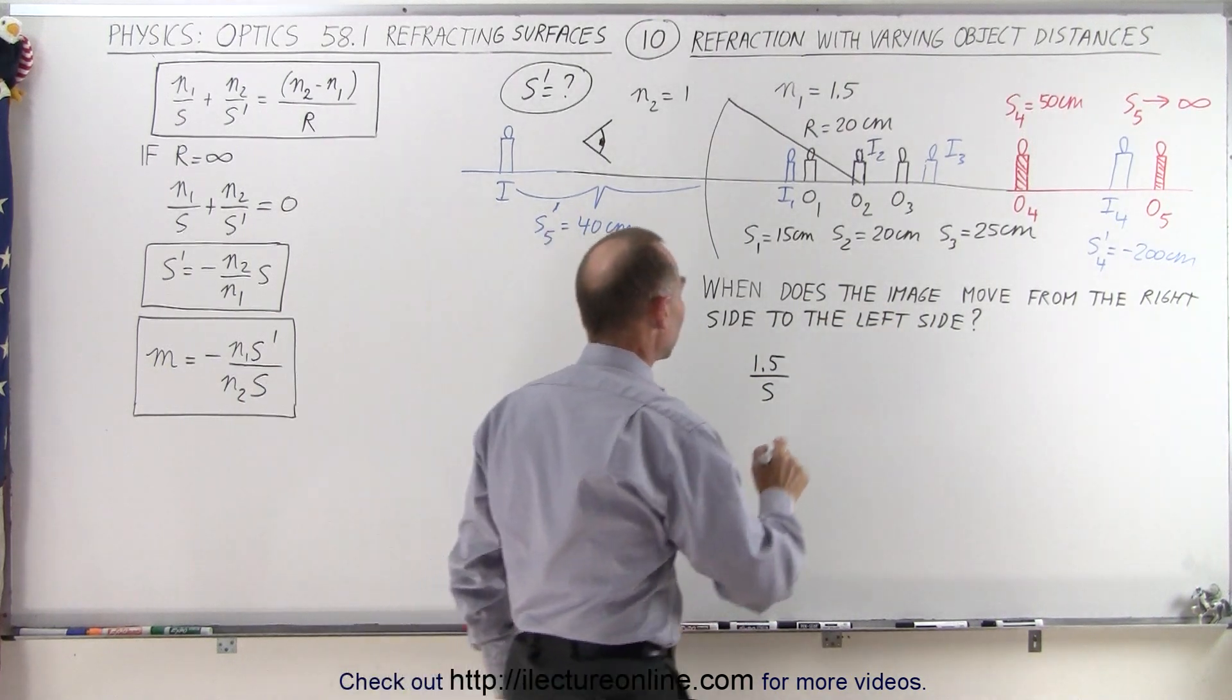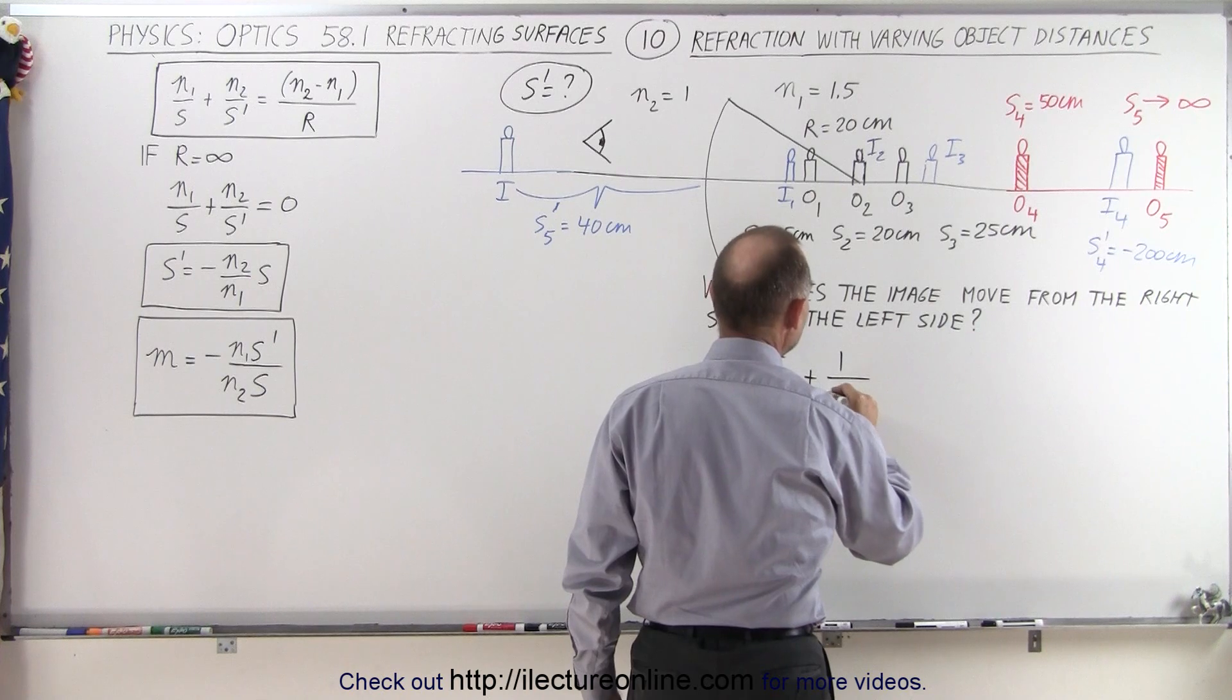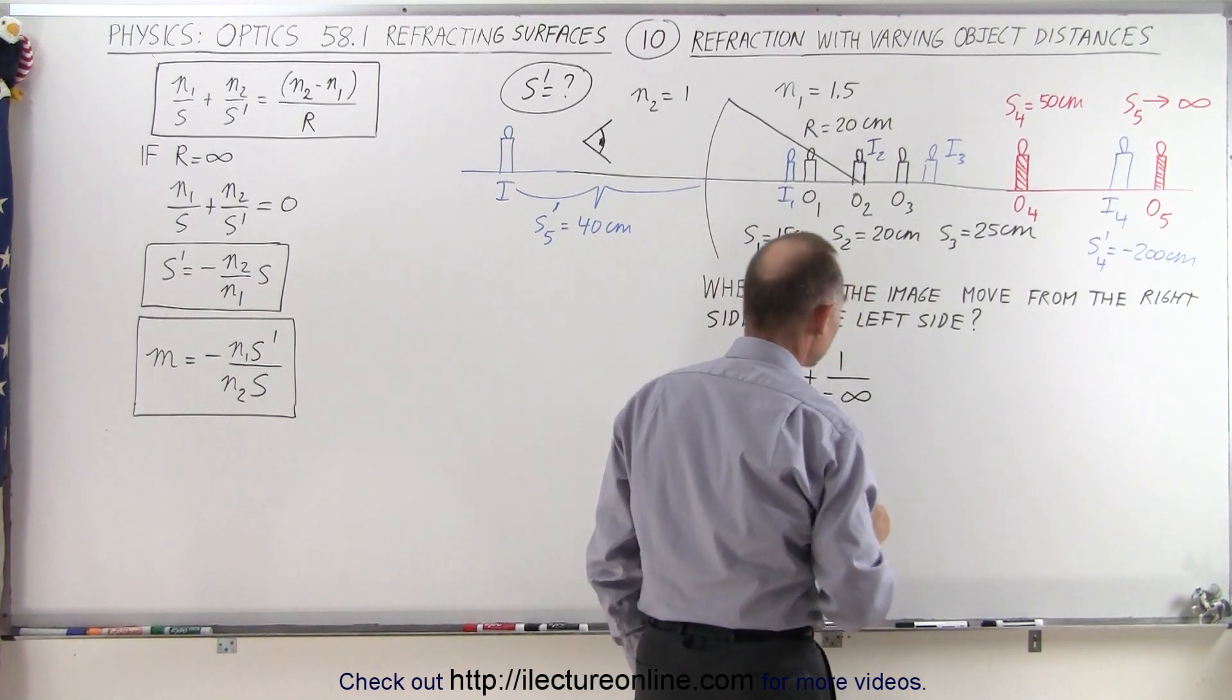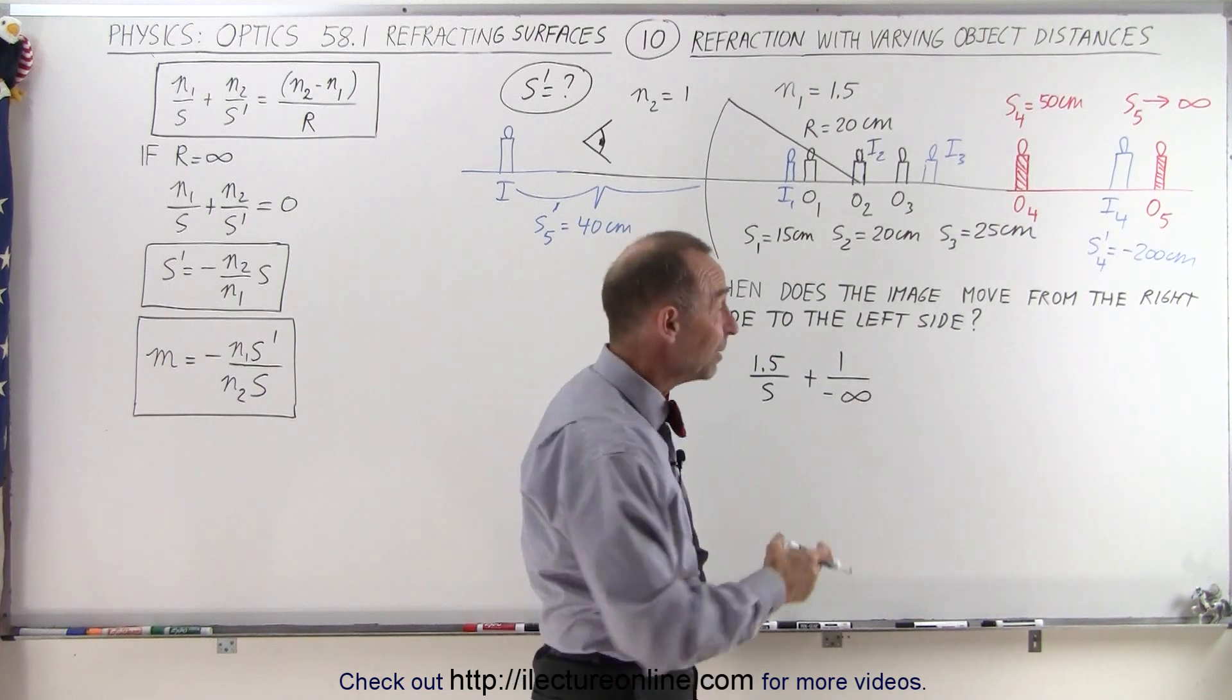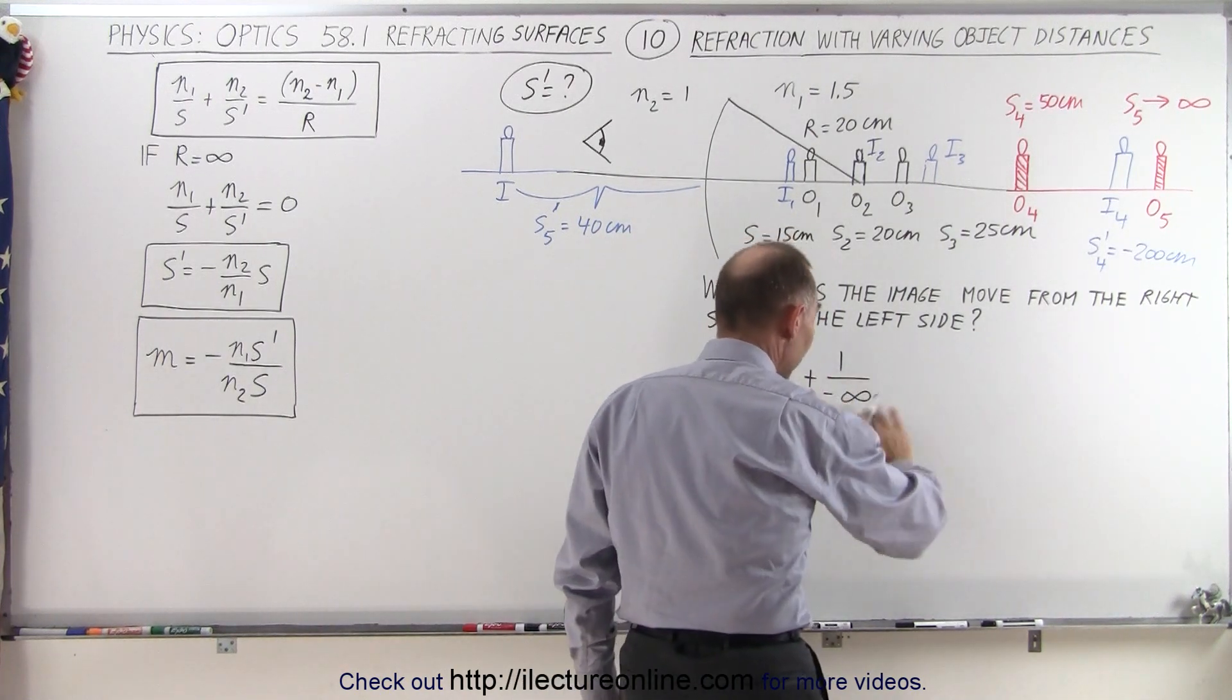Then we have plus N2, which is plus 1, divided by negative infinity. It doesn't really matter if it's negative infinity or positive infinity, but when it goes to infinity, this goes to 0.